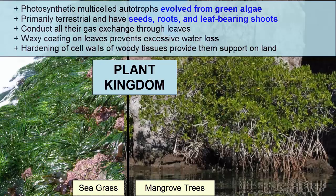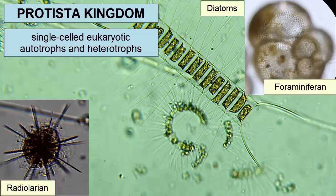The Plantae kingdom also consists of photosynthetic multi-celled autotrophs; however, these evolved from green algae. Plants are primarily terrestrial and have seeds, roots, and leaf-bearing shoots. They conduct all their gas exchange through leaves, and a waxy coating on leaves prevents excessive water loss. The hardening of cell walls of woody tissues provides support on land.